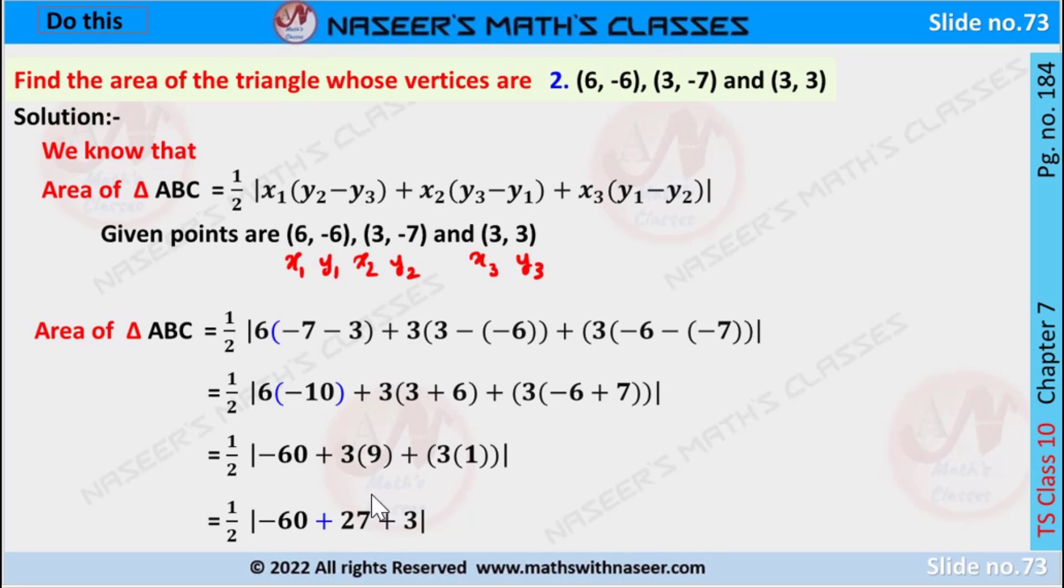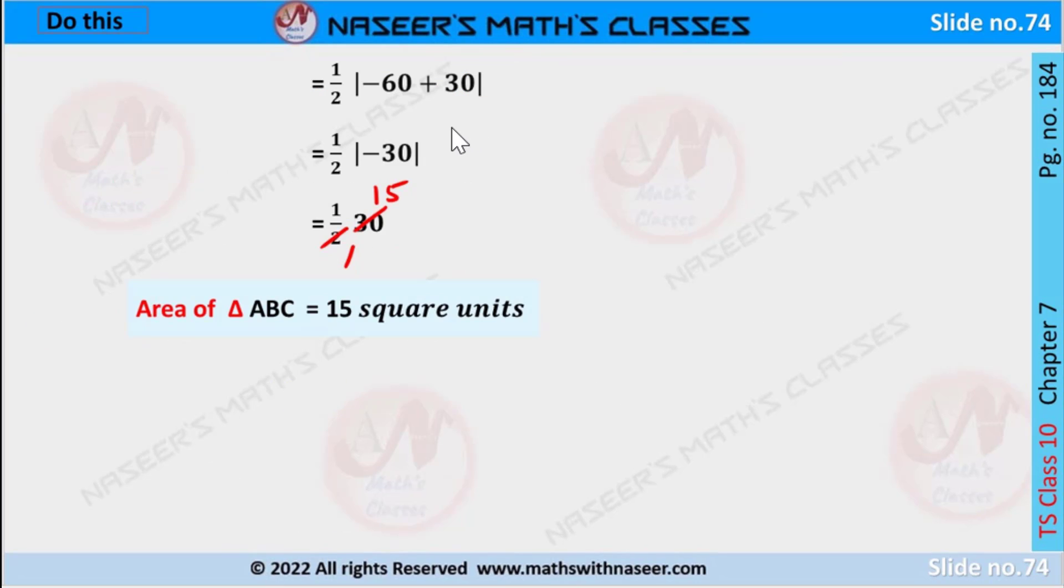Now 3 into 9 is written as 27, and 3 into 1 is written as 3. After adding 27 and 3 we get 30.